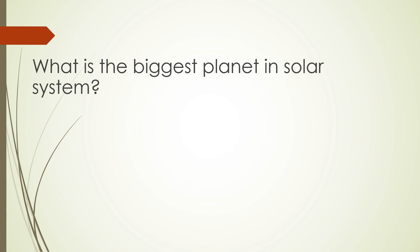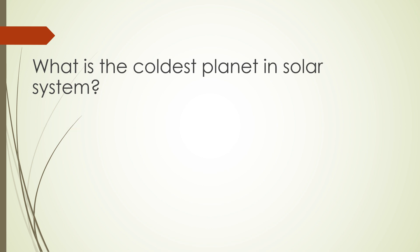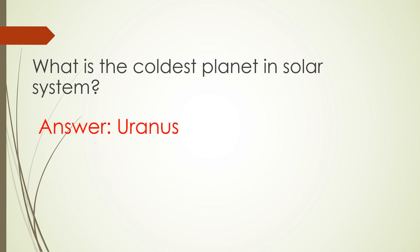What is the biggest planet in the solar system? Answer: Jupiter. What is the coldest planet in the solar system? Answer: Uranus.